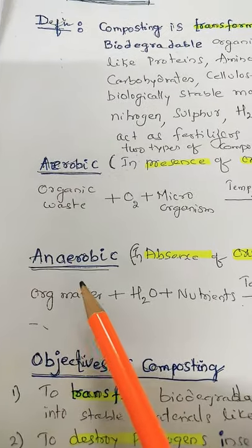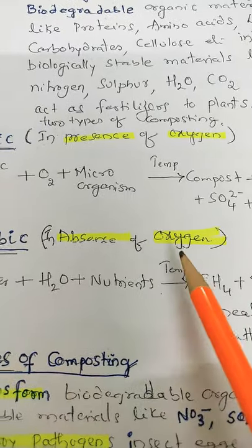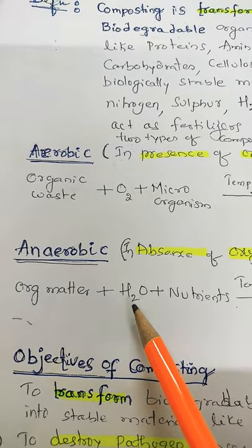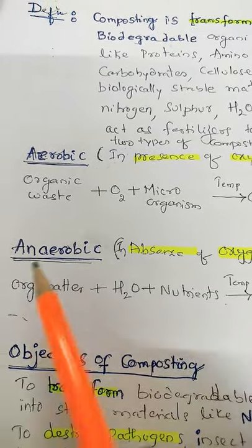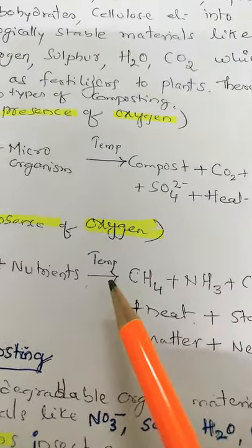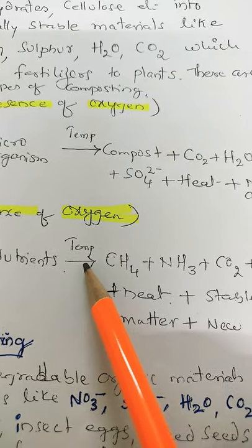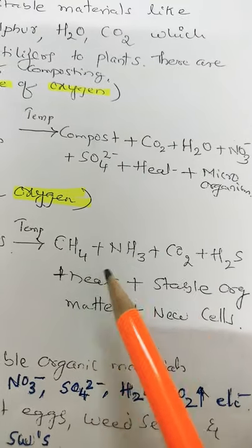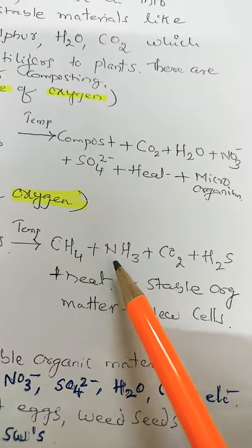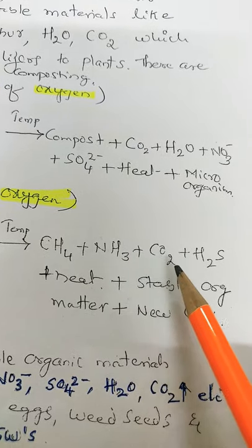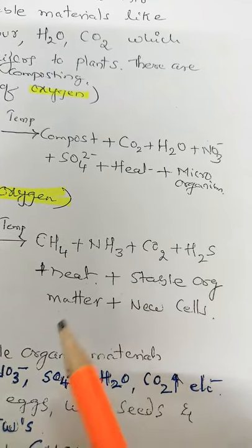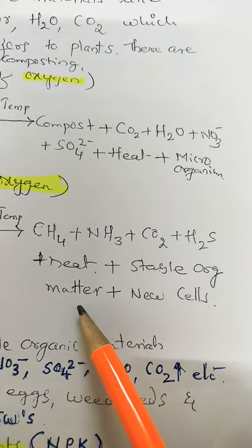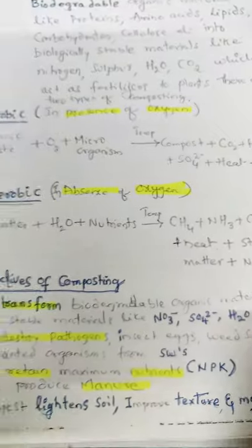Anaerobic reaction — that is in absence of oxygen. The organic matter plus water and nutrients, with no oxygen, in presence of warm temperatures, produces organic matter plus CH4 that is methane, then nitrogen, plus carbon dioxide, then H2S gas, some amount of heat and stable organic matter, plus some new cells are liberated.